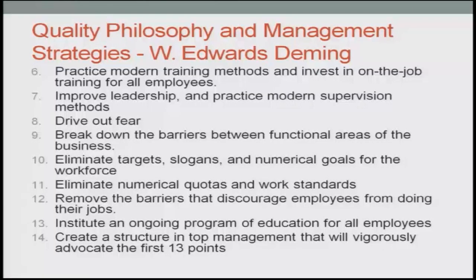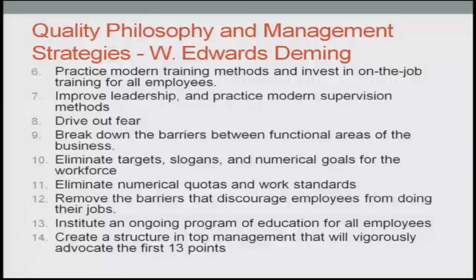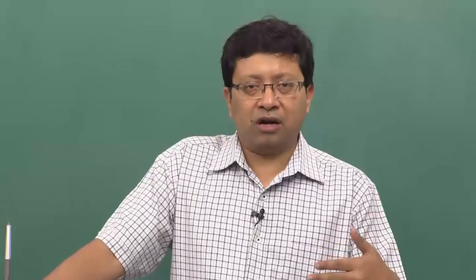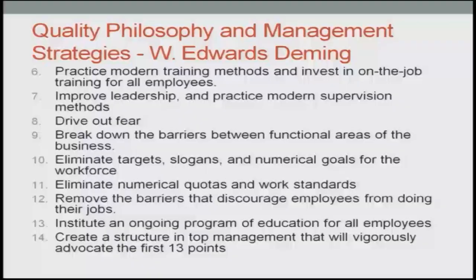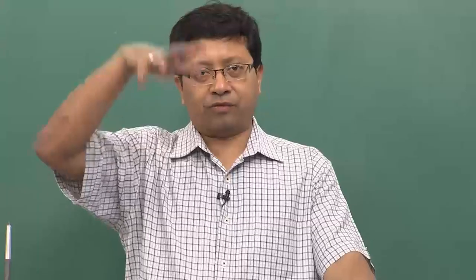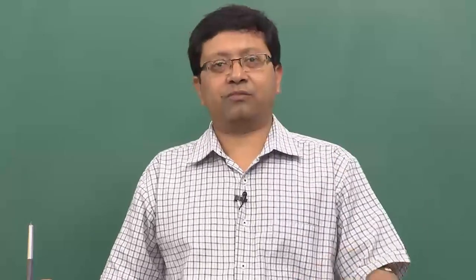Eleventh: eliminate numerical quotas and work standards. Twelfth: remove the barriers that discourage employees from doing the job. These points relate to where people are restricted when numbers rather than quality are the priority — that basically puts a hindrance on the employees or subordinates working under you. Thirteenth: institute an ongoing program for education so that employees are educated on new statistical tools, different types of machines, and different types of raw materials, allowing them to learn and improvise on their overall process. Fourteenth: create a structure in top management — this information should come from the top management so they should also be inculcated in this idea. If the overall thought process from the top management is positive, it will definitely percolate down the line.